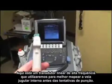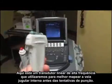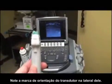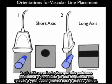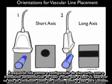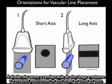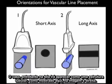Here's the high-frequency linear array probe that we'll be using to best map out the internal jugular vein before puncture attempts. Notice the probe marker to the side of the probe. Here are the orientations we can place the probe in relation to the internal jugular vein for vascular line placement. In the short axis configuration, the probe is perpendicular to the vessel, and the vessel will appear on the ultrasound screen as a circle, as the vessel is cut end-on. In the long axis configuration, the probe is placed along the long axis course of the vessel, so it appears as a tubular structure on screen.